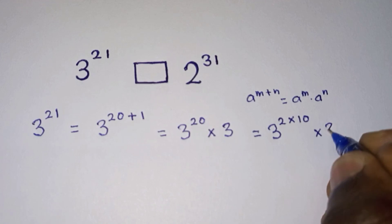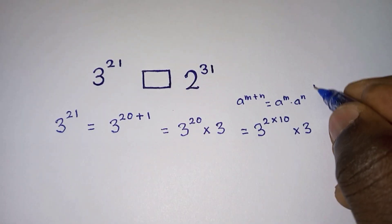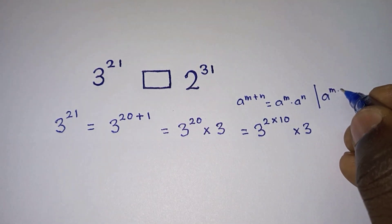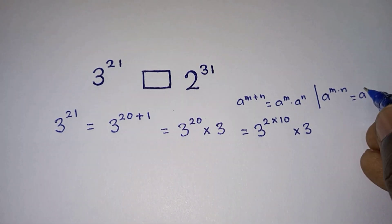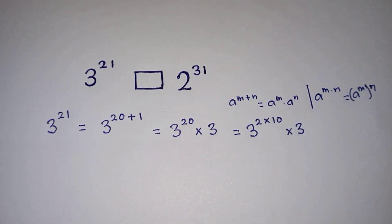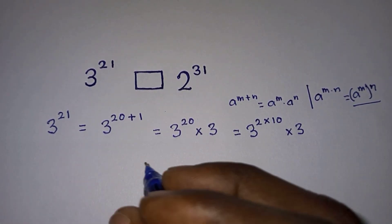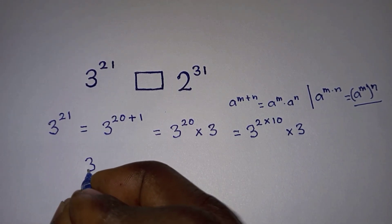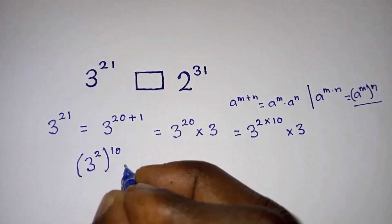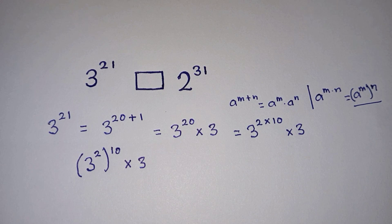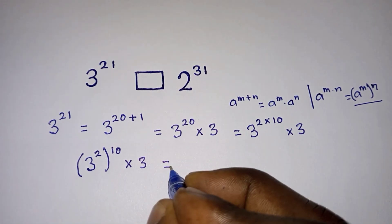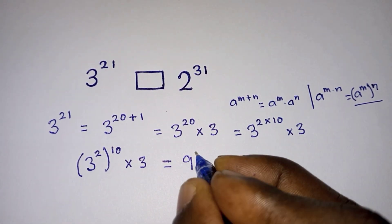We can also write three to the power 20 as three to the power two times ten. Then times three. We will also apply another power rule: a to the power m times n is the same as a to the power m to the power n. So based on this rule we can write this as three to the power two, to the power 10, then times three. What is in the parenthesis is equal to nine — three squared is nine — so we will have nine to the power 10 times three.